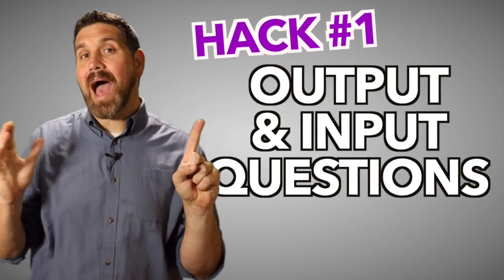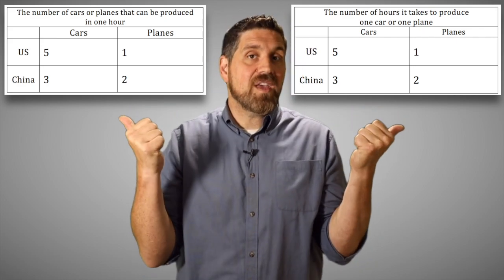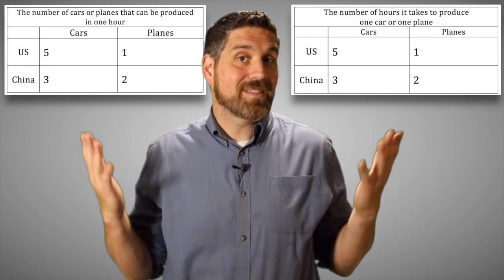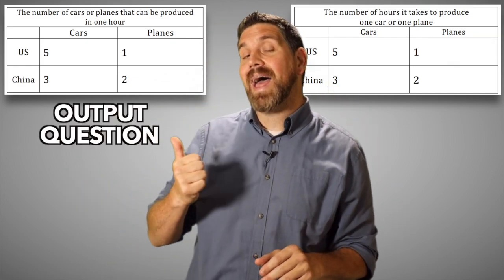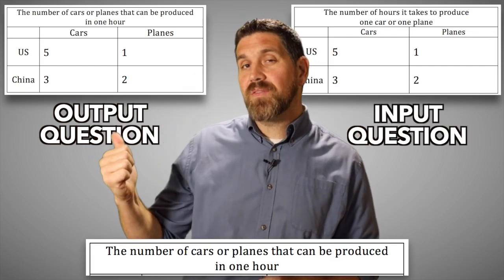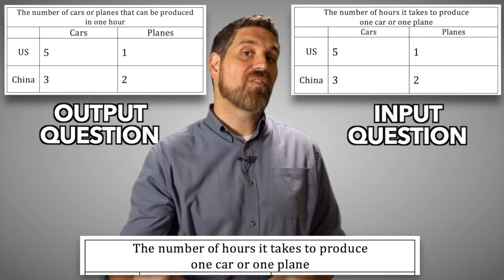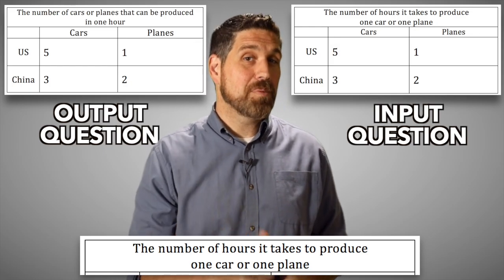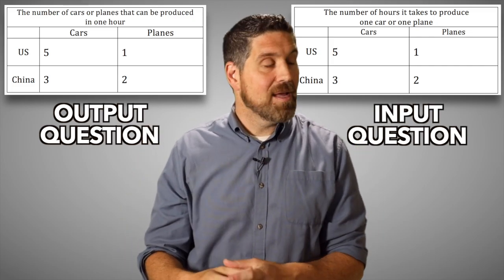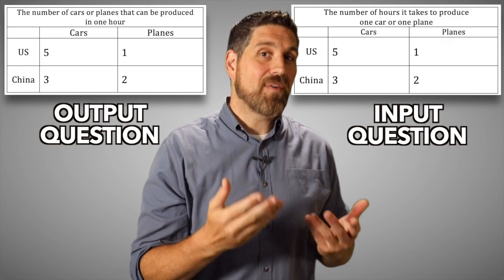Hack number one is spotting output and input questions. If your teacher or professor gave you one of these two tables, you might think they're exactly the same — for the United States it's five and one, and for China it's three and two. But these are completely different. This one is an output question and this one is an input question. These numbers represent the number of cars or planes that can be produced in one hour, but these numbers represent the number of hours it takes to produce only one car or one plane.